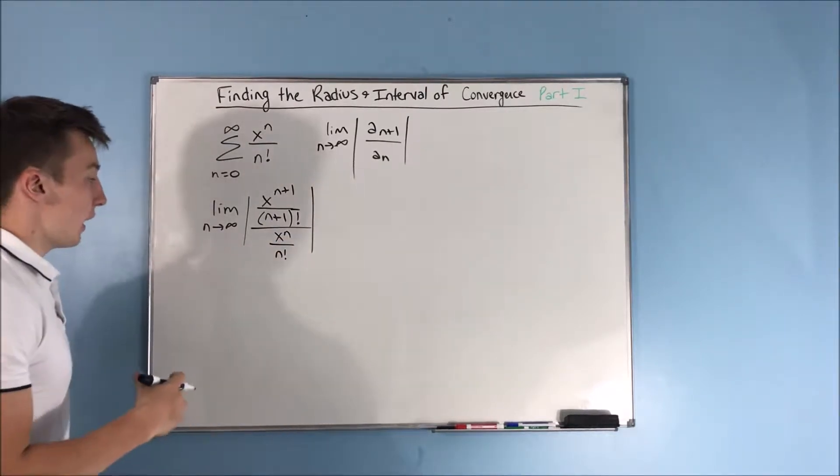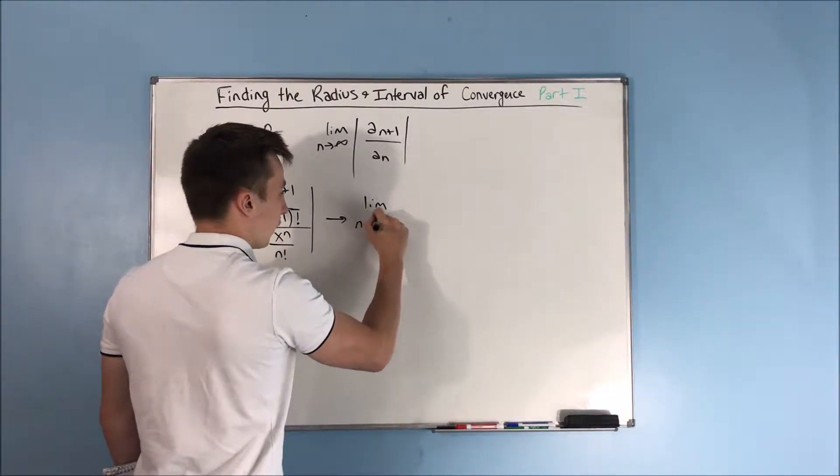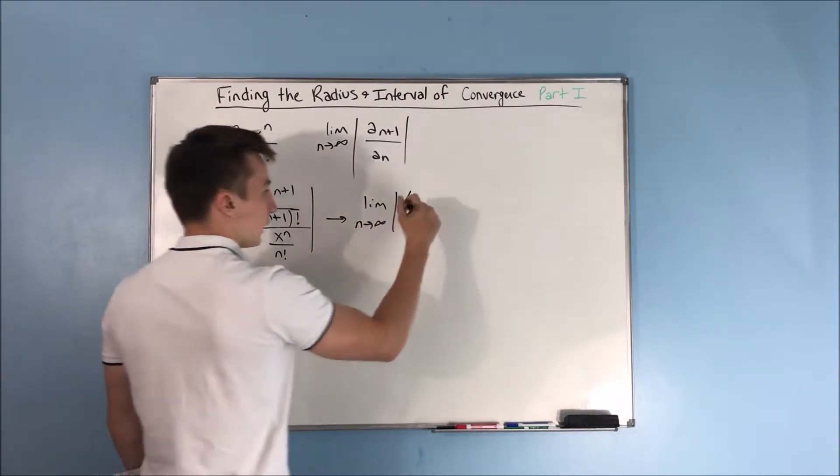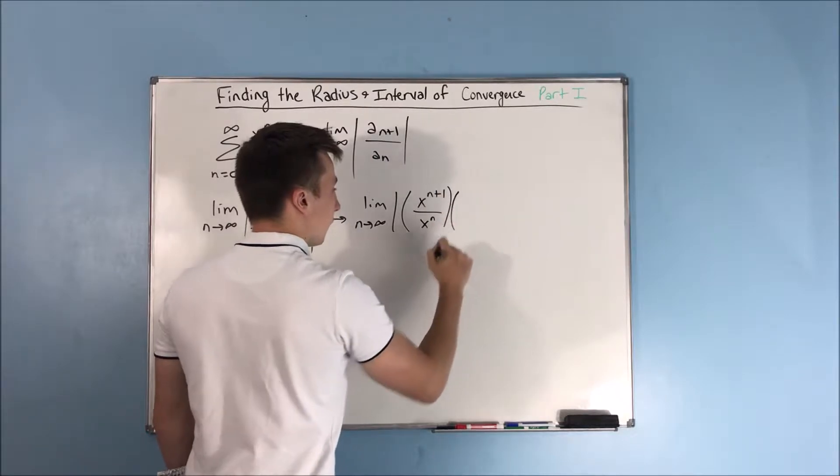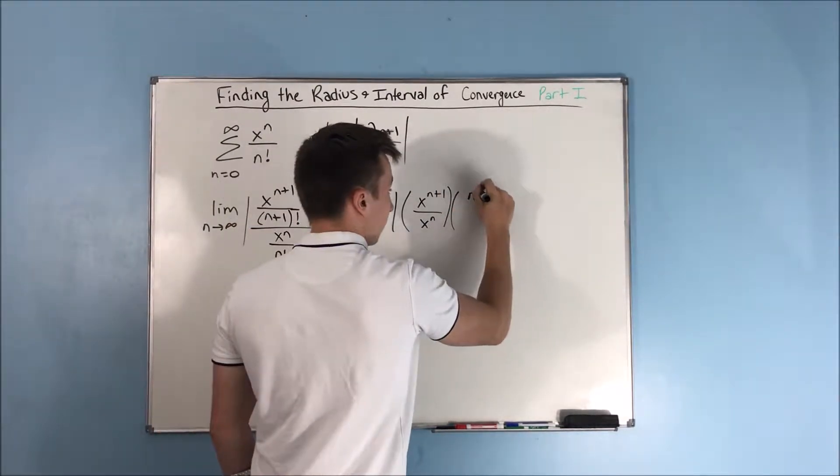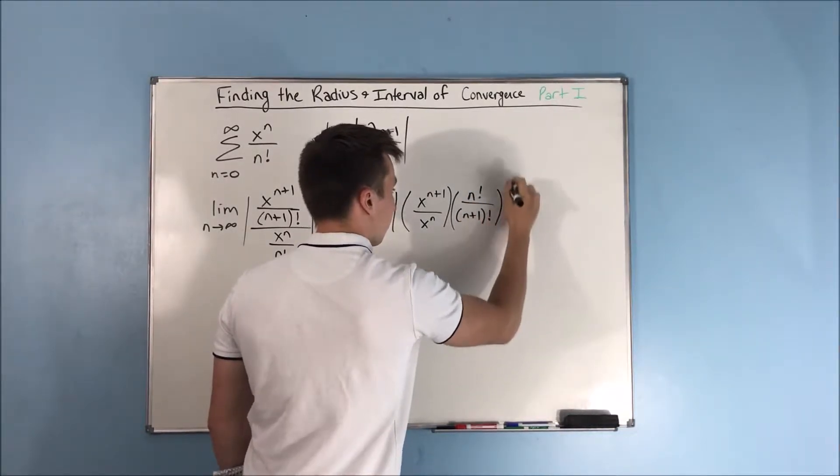So we can now just group these things together, and we get the limit as n approaches infinity of the absolute value of x to the n plus 1 over x to the n times n factorial over n plus 1 in parentheses factorial.